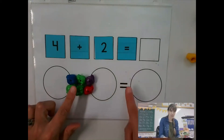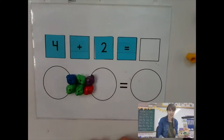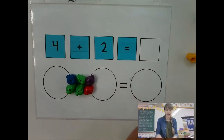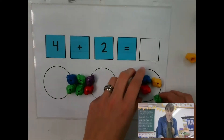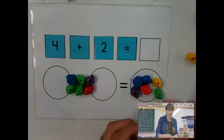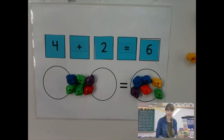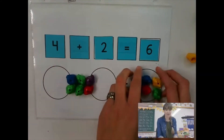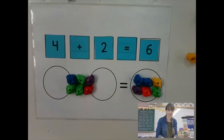Now look, I have my equal sign. So if I have six on this side, what do I have to have on that side? Six, right. And then I can find my number six. So if I have six on one side, I have to have six on the other side.